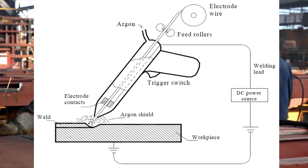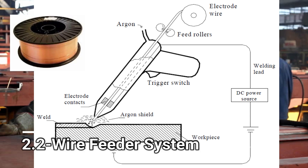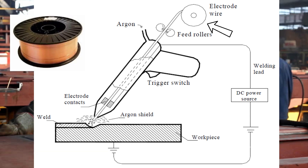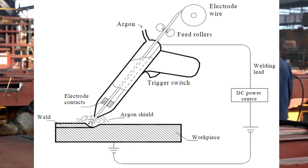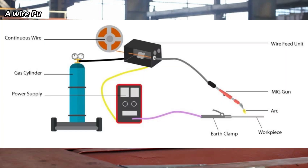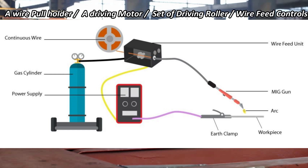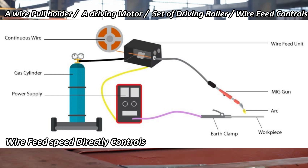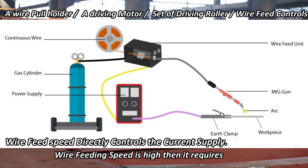MIG welding needs a continuous consumable electrode supply for welding two plates. This consumable electrode is used in the form of wire, which is continuously supplied by a wire feed mechanism or system. It controls the speed of the wire and pushes it from the welding torch to the welding area. These are available in different shapes and sizes. It consists of a wire spool holder, a driving motor, a set of driving rollers, and wire feed controls. The wire feed speed directly controls the current supply; if the wire feeding speed is high, it requires more current in the welding zone to produce proper heat for melting.